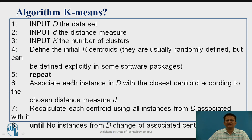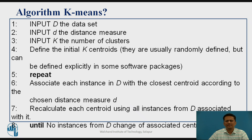Once this is done for all data values, you find the next centroid by recalculating it from the associated data. You use those data values to form a new centroid, then repeat the same procedure. In every iteration the association of data points changes based on the distance measure. You repeat this until no instances in the dataset change their associated centroid, at which point the K-means algorithm terminates.